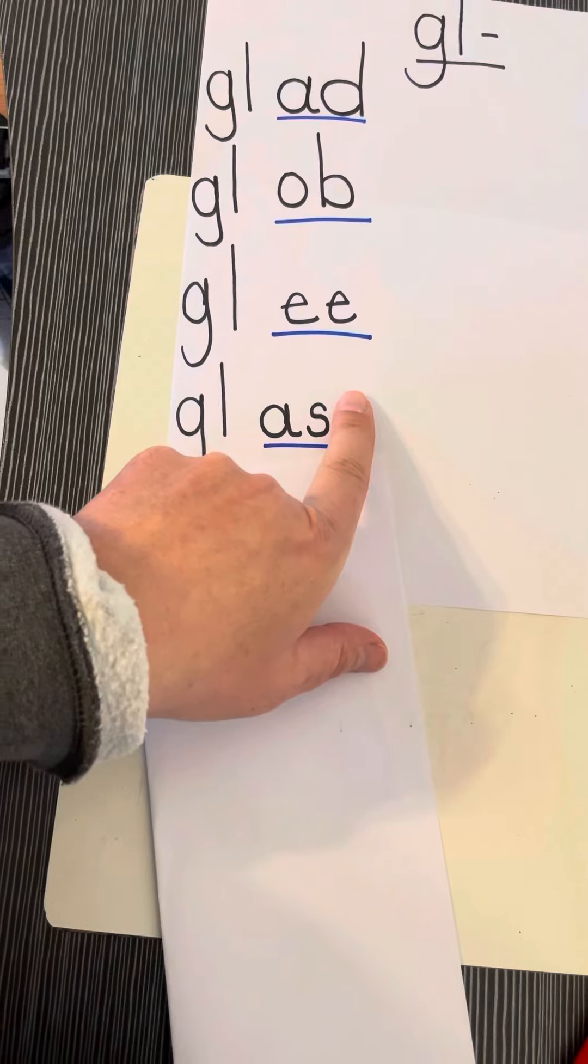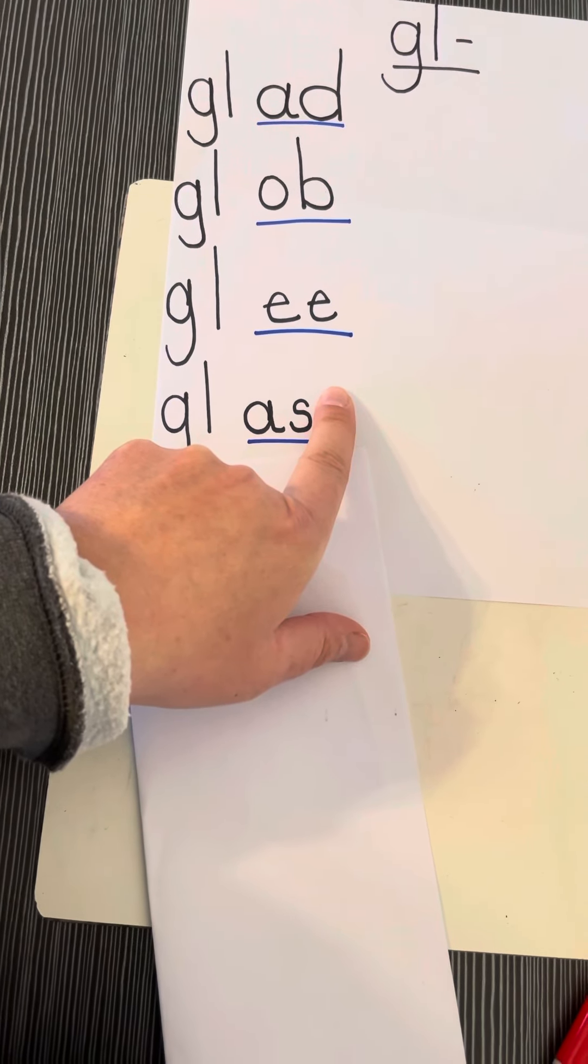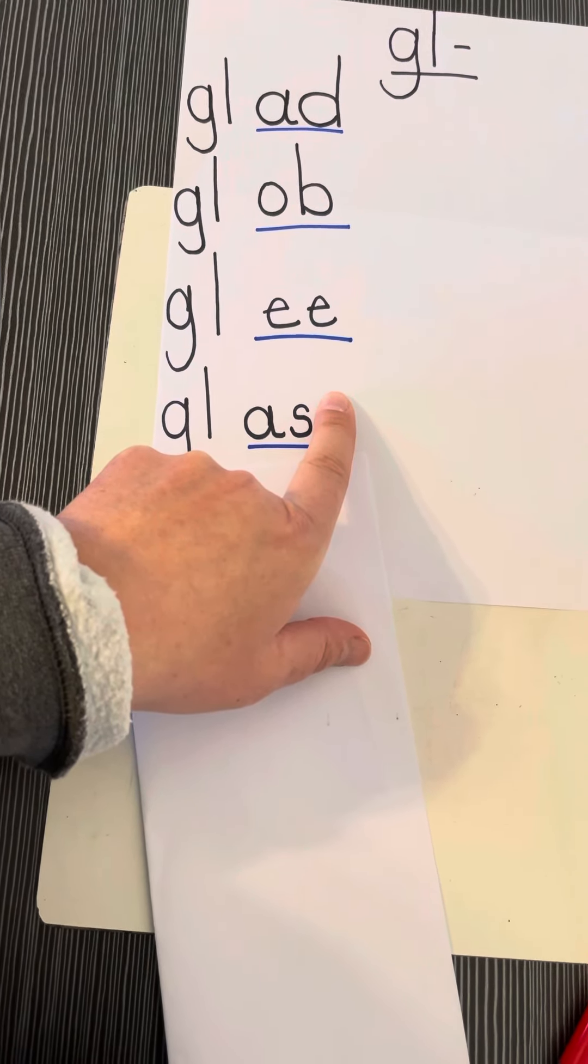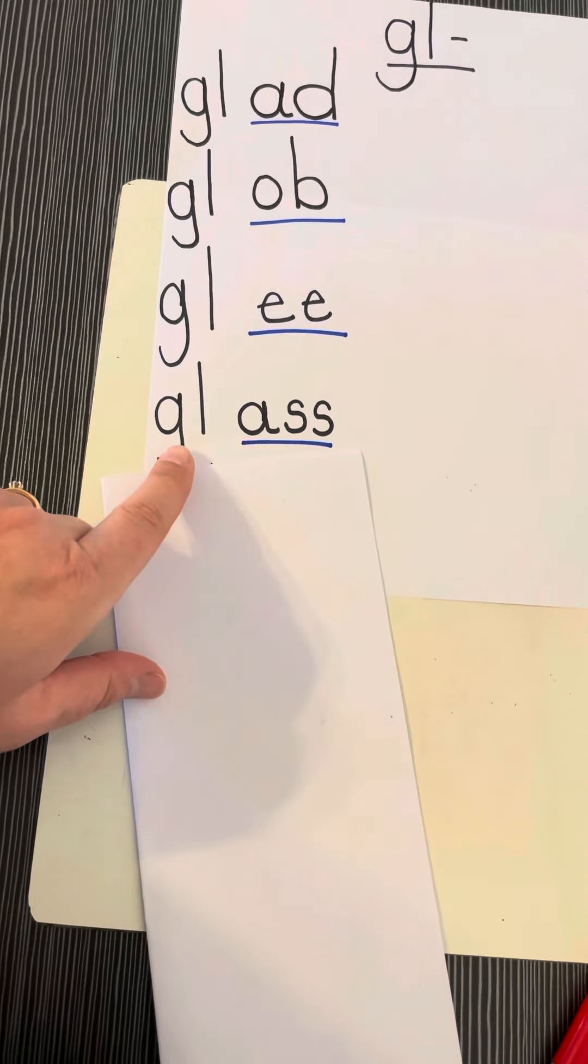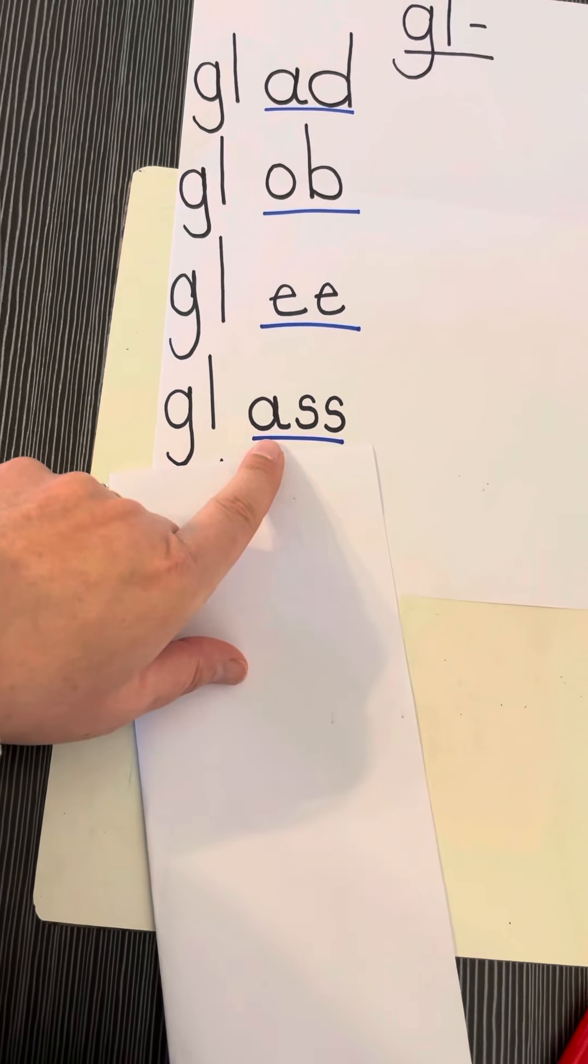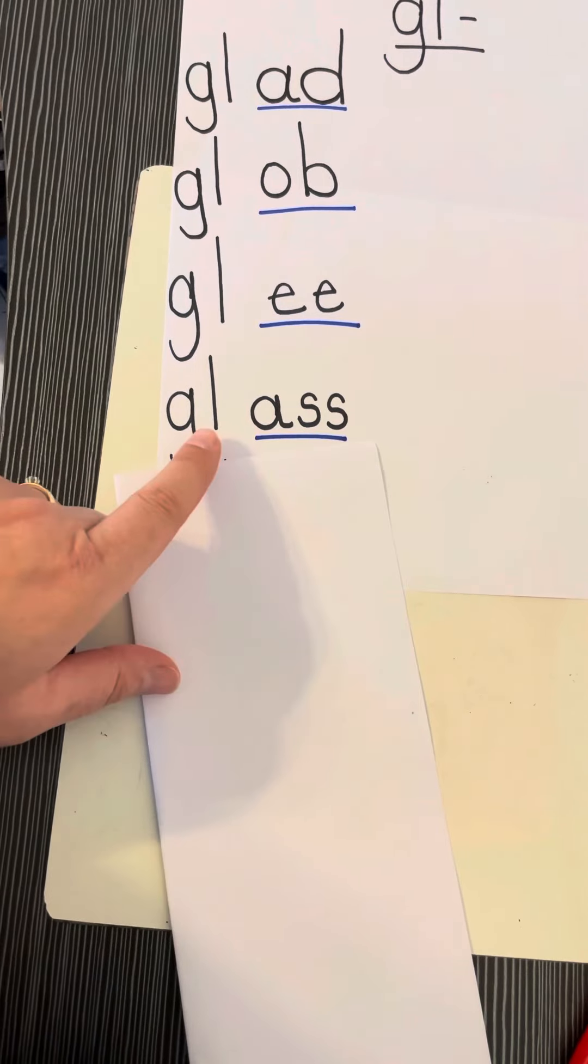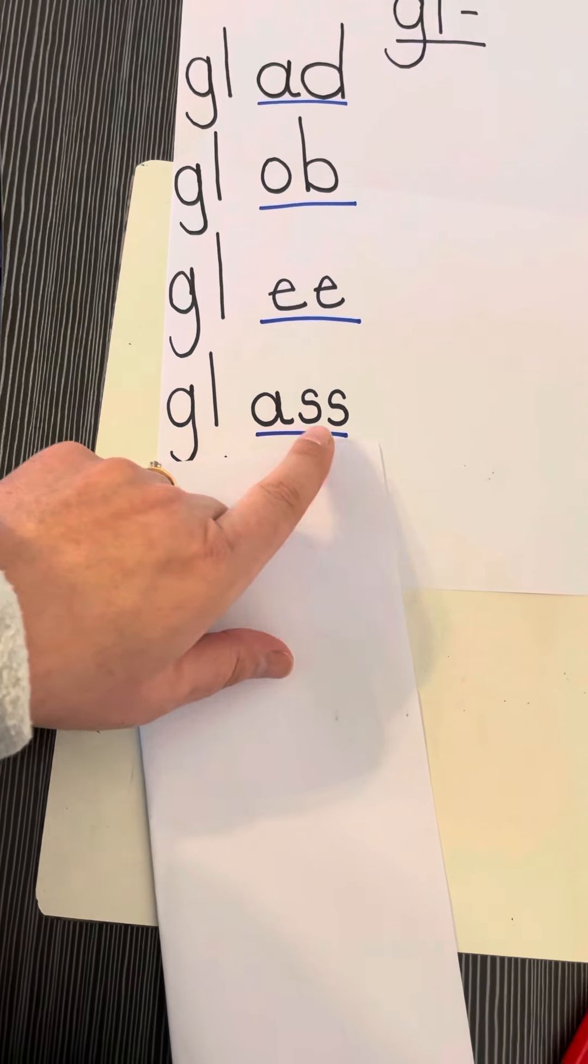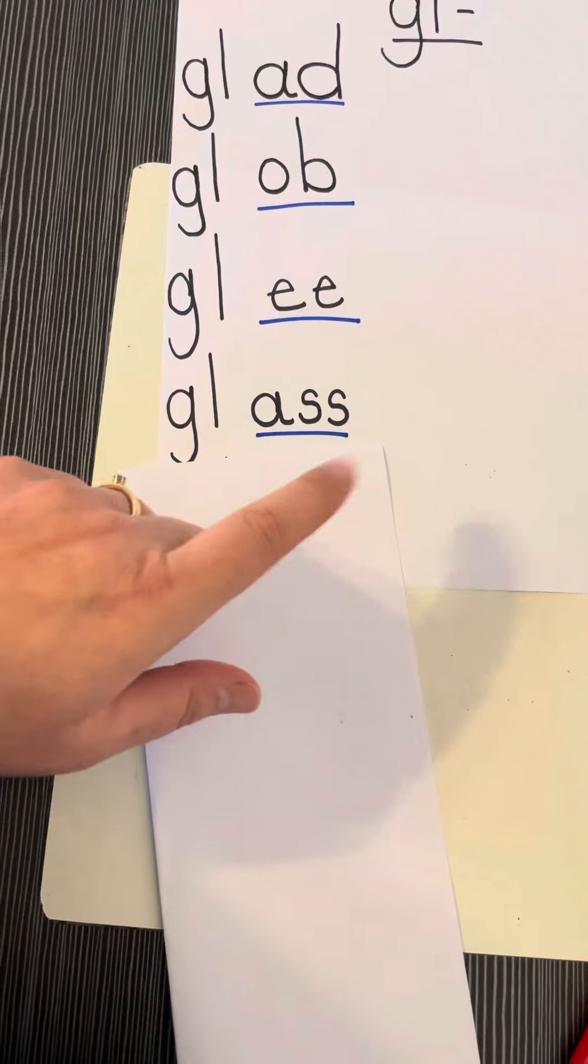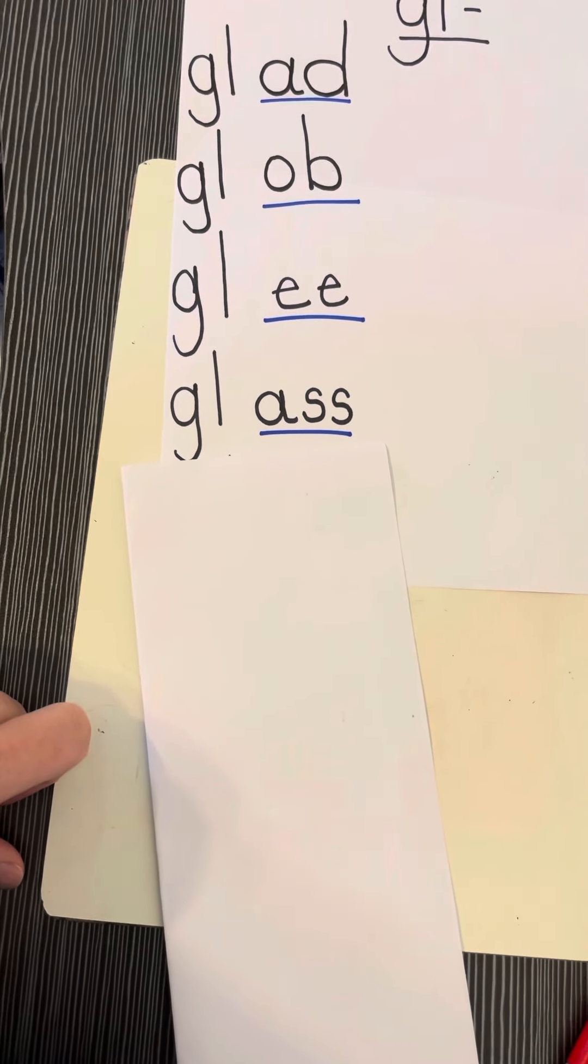We have two S's. Remember, if you have two S's, you only hear the first S, the second S is silent. We have GL says 'ghoul', A says 'ah', S says 'ss'. Ghoul-ah-ss, ghoul-ass, glass. The glass on your window, glass.